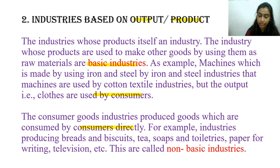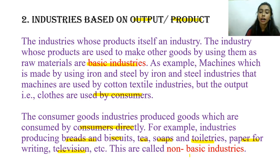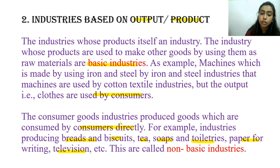Next is the consumer good industry, which produces goods that are consumed directly by consumers. Industries producing bread, biscuits, tea, soaps, toiletries, paper, and televisions — everything that consumers directly consume — fall into this category. These are called non-basic industries because they do not provide raw material for other industries. They are totally dependent on consumers' purchasing power.